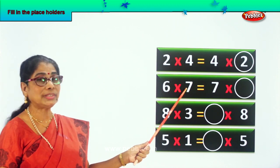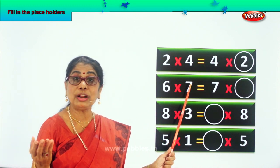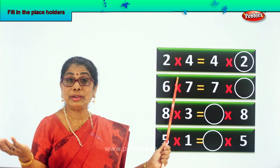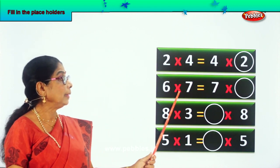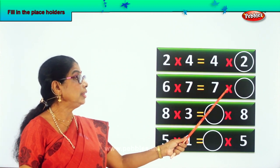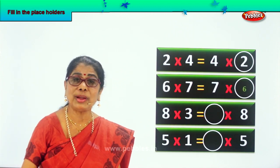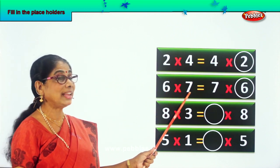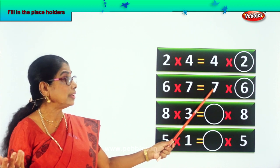6 into 7. 6 into 7 is what? 42. Now the same answer you must get on the other side. 6 into 7 is also equal to 7 into what number will give you 42? You have to have only 6. Very good. 6 into 7 is also equal to 7 into 6.